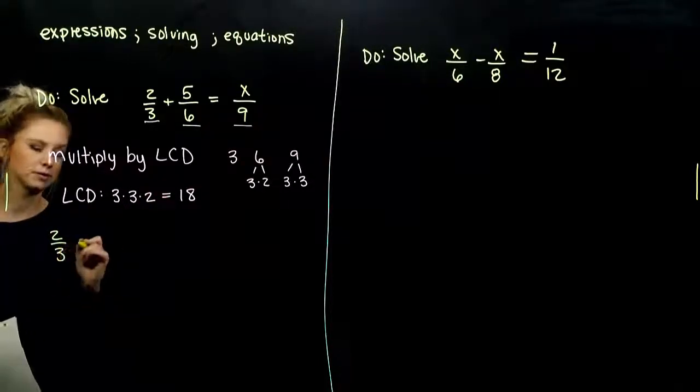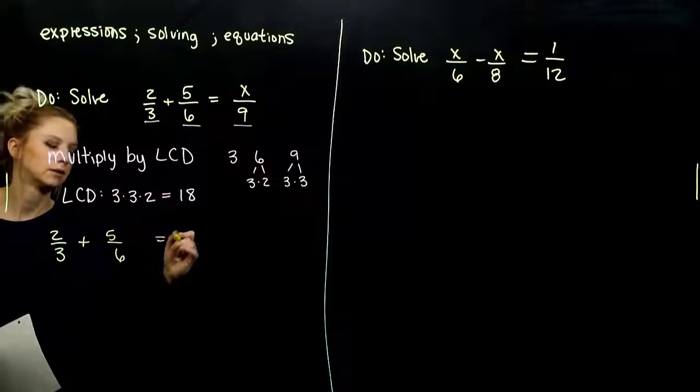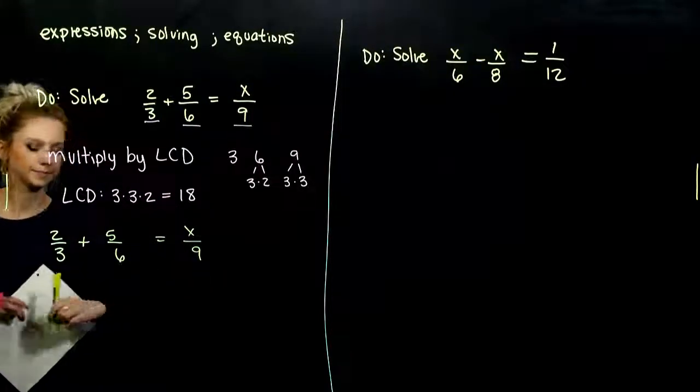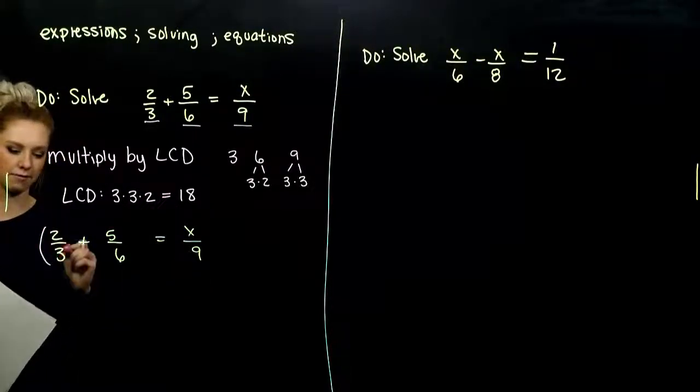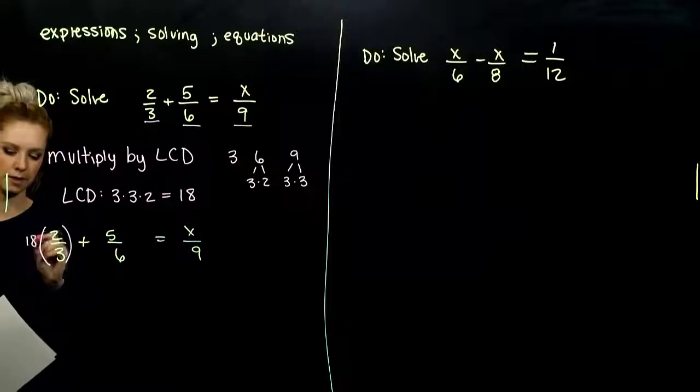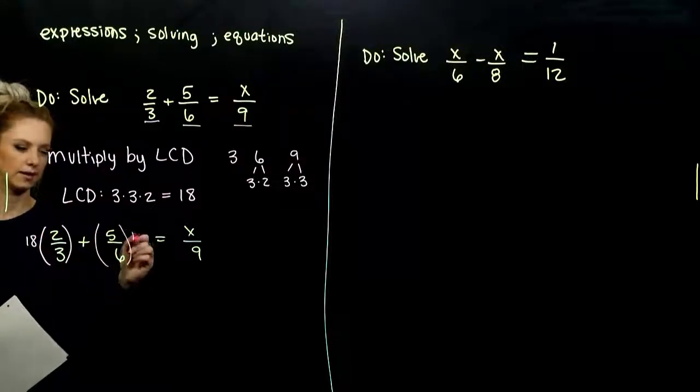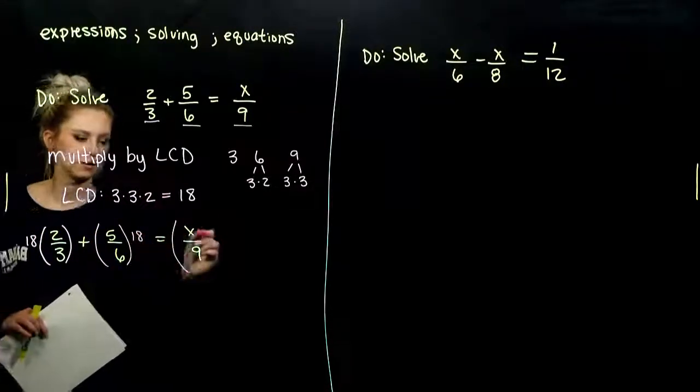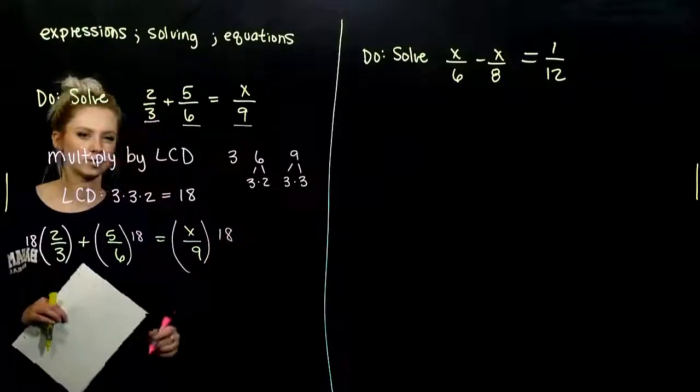So if we take that and multiply every single term in our equation by that LCD, it's designed to be divisible by 3, 6, and 9. Get rid of all of those fractions. So let's do that. I've got 2 thirds, 5 sixths, and x over 9. And again, every single term needs to be multiplied by 18.